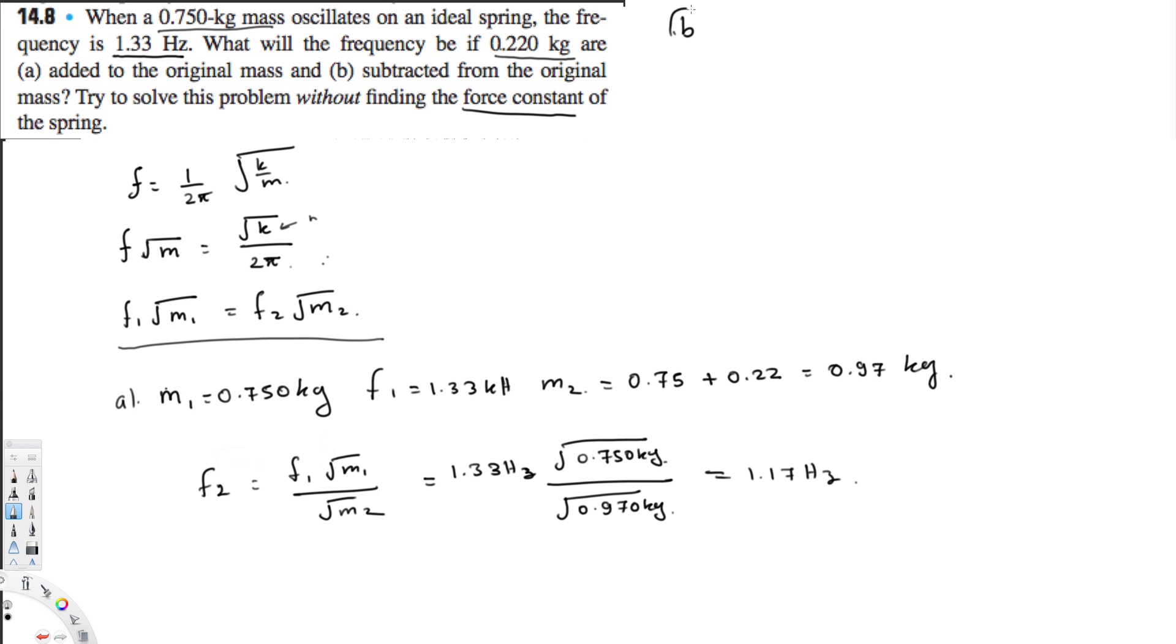to 0.750 kilograms, f₁ equals 1.33 Hertz, and in this case m₂ is going to be the subtraction: 0.750 minus 0.220, which gives us 0.530 kilograms.